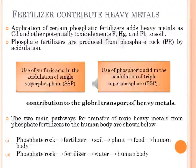Two main pathways for the transfer of heavy metals from phosphate fertilizers to the human body are: first, phosphate fertilizers contaminate the soil, and when used for crop production, contaminants enter the plant and from the plant enter the food of the human body via the food chain. Second, phosphate fertilizers contaminate water bodies, and through the water bodies they contaminate the human body.